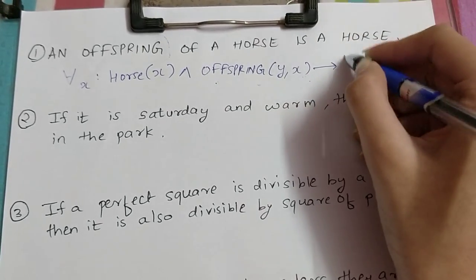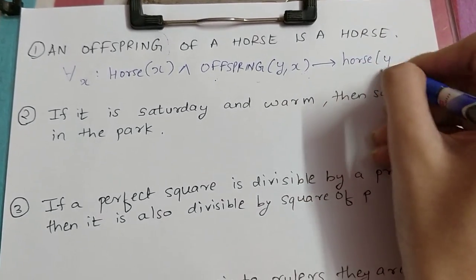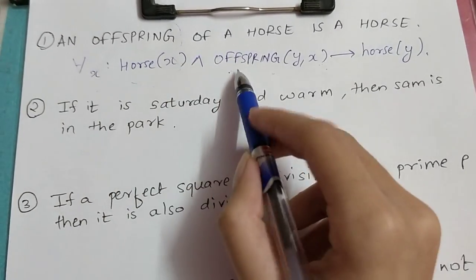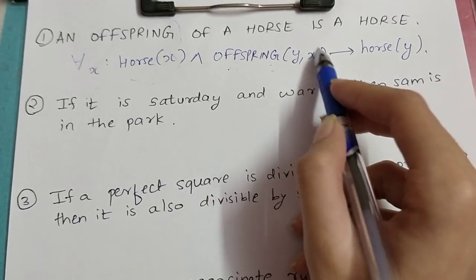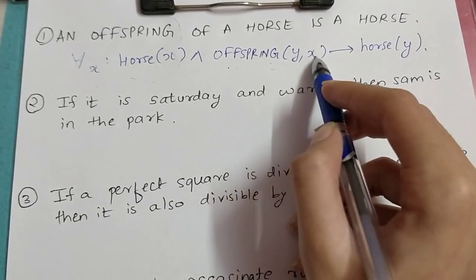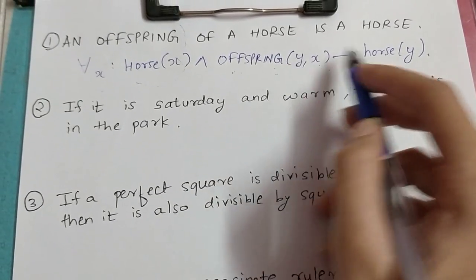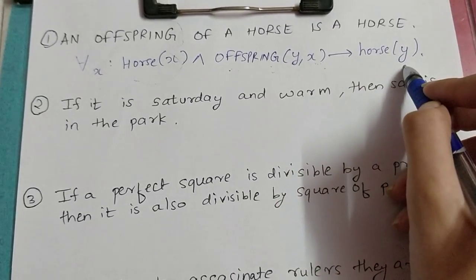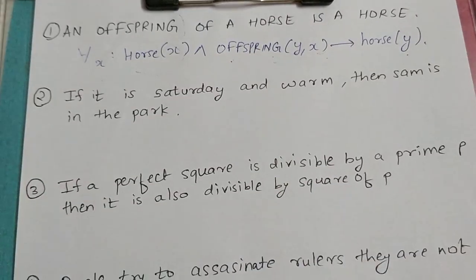So it implies horse(Y). Basically, for all X, offspring(Y, X) means Y is an offspring of a horse X. This implies that Y is also a horse. This is how we solve FOL.